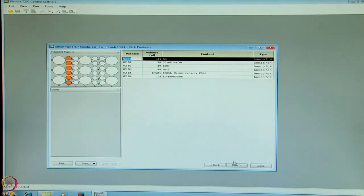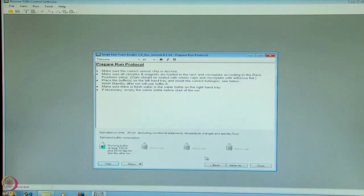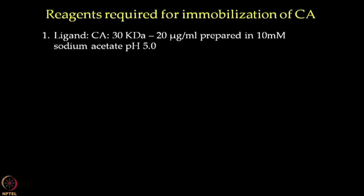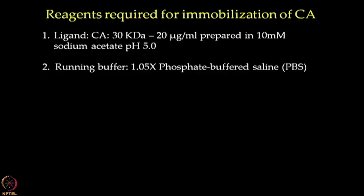Once the template is prepared, we go on to the next tab and we identify the run time of 36 minutes with a buffer consumption of at least 100 ml for this particular session. As per the volume listed on the table, we will prepare the buffers and reagents required for immobilization of carbonic anhydrase on the sensor chip. The ligand is prepared at a working concentration of 20 microgram per ml using an immobilization buffer of 10 millimolar sodium acetate pH 5. We will be using 1.05x PBS buffer as the running buffer which will be connected to the system followed by priming.